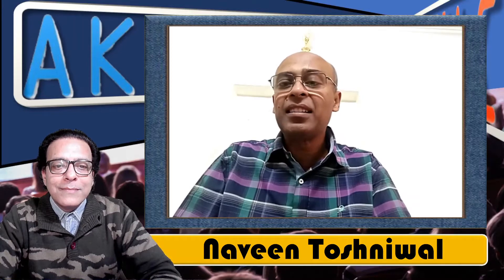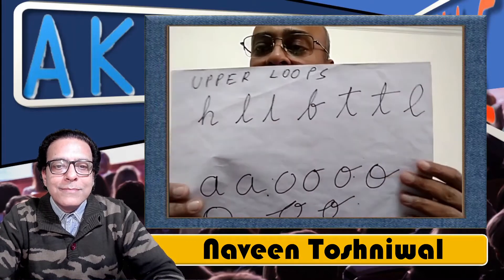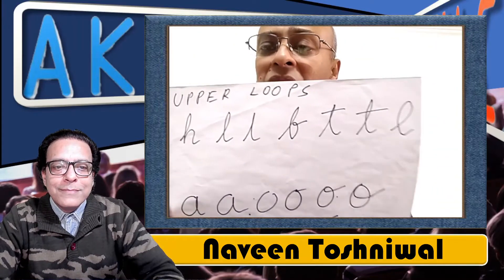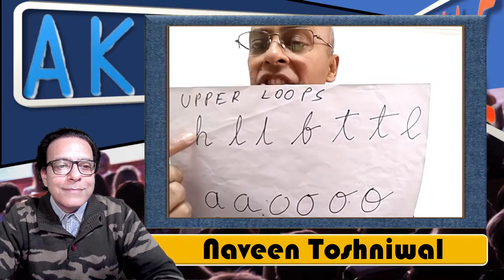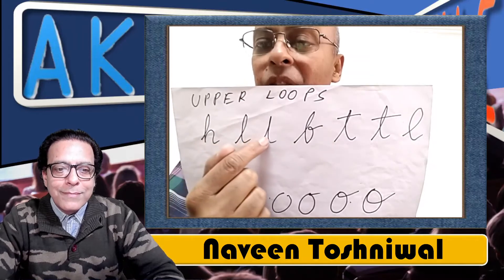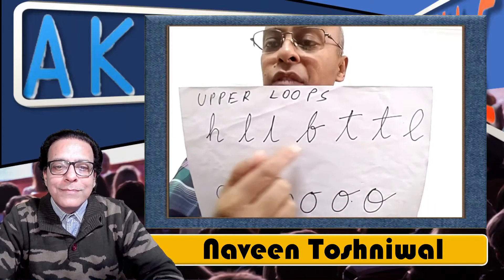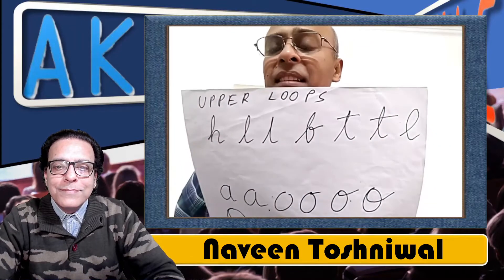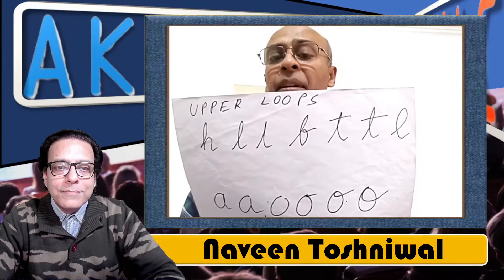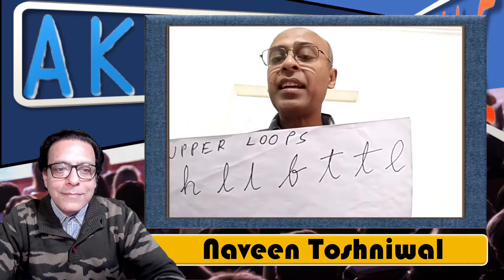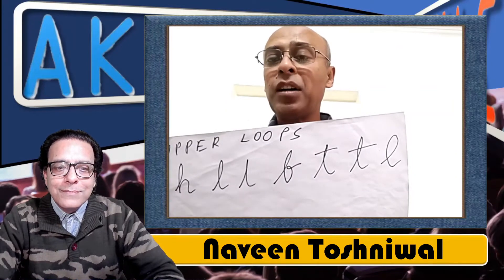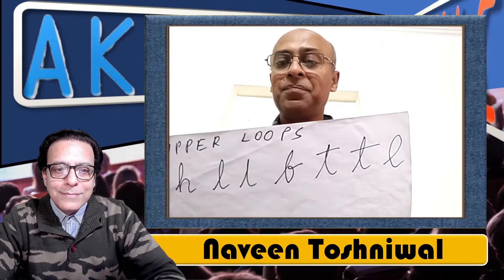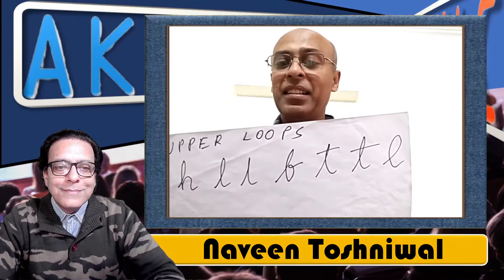I'll show you two charts today — one relates to upper strokes, another to lower strokes, and maybe some round letters. Here you will see some upper strokes: H, L written in different ways, B, T — these are normally the upper strokes we make. Now, if there is a loop in the upper stroke, this indicates the person is sensitive. Sensitivity can mean a person who is touchy, who will get hurt very easily — even if someone says something jokingly, the person may take it to heart. The bigger the loop, the more sensitive the person is.